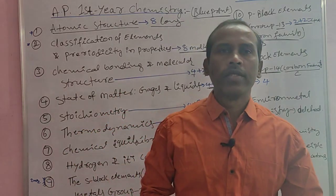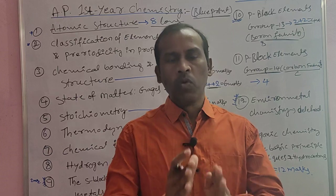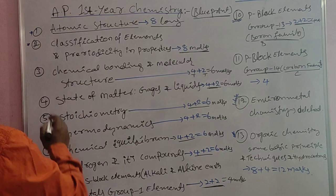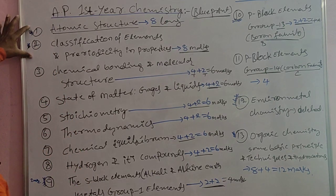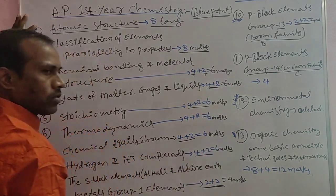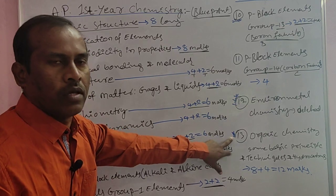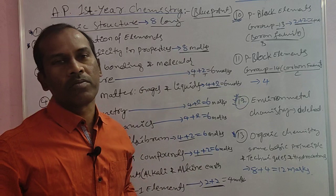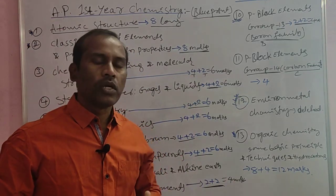According to the AP Government blueprint, chapter-wise weightage marks are as follows: for the first and second topics, there is one long answer each. For the remaining topics, there are short answers and very short answers. From Organic Chemistry — the 12th and 13th topics — there is one long answer and one short answer. This completes the blueprint overview.